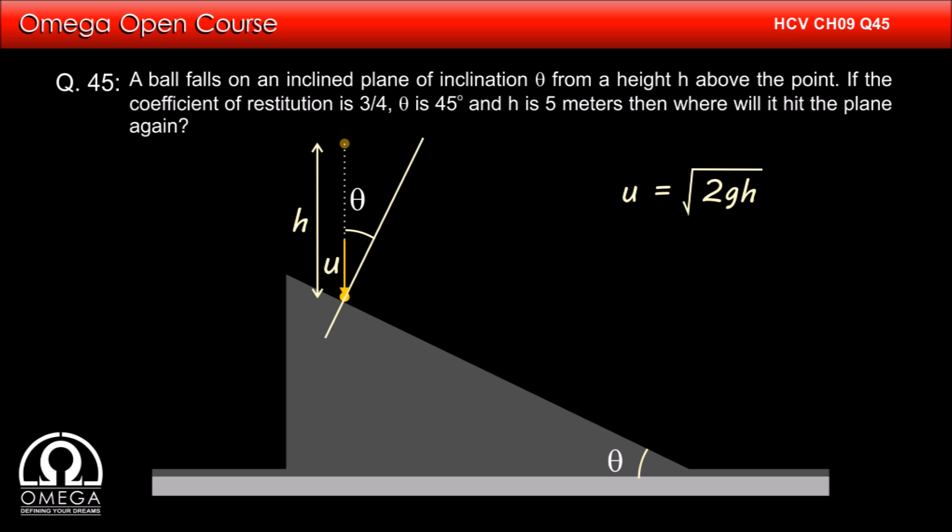Let us assume that after the collision, the ball bounces with speed v at an angle phi with the normal. Since the coefficient of restitution is e, v cos φ equals e u cos θ and v sin φ equals u sin θ.